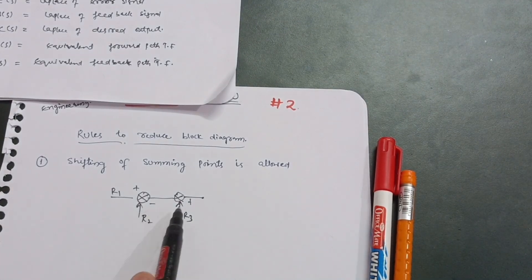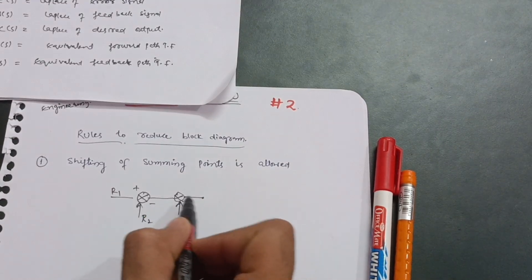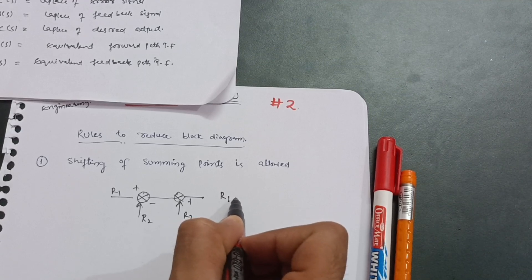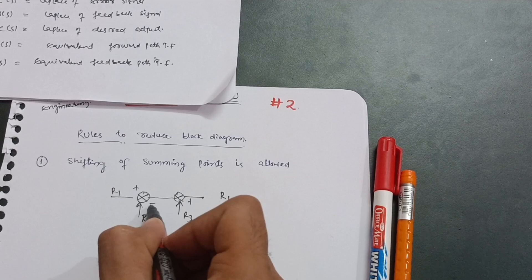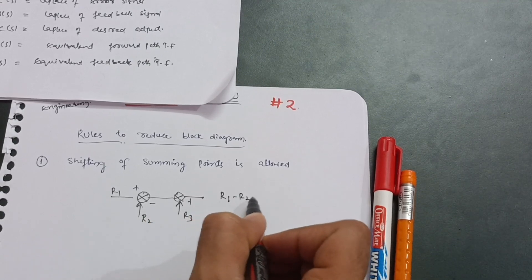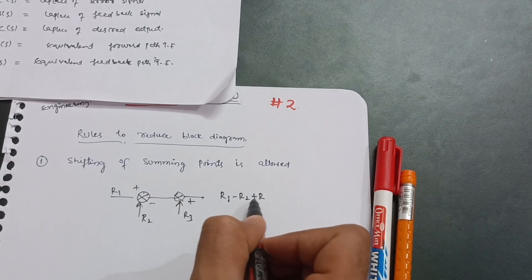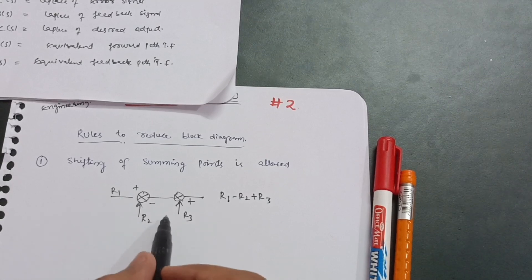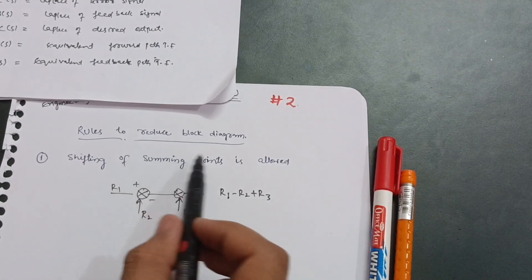Now if I just shift these particular summing points, I will get R1 minus R2, and this is again plus feedback, so this will become R1 minus R2 plus R3. This is our output. So shifting of summing points is allowed in the reduction of the block diagram.